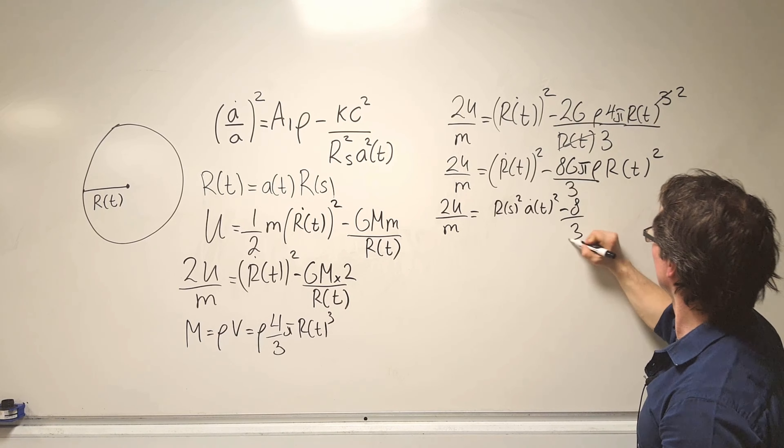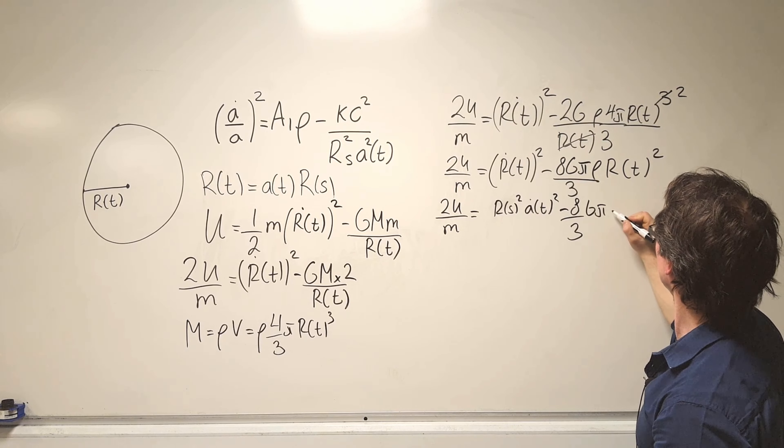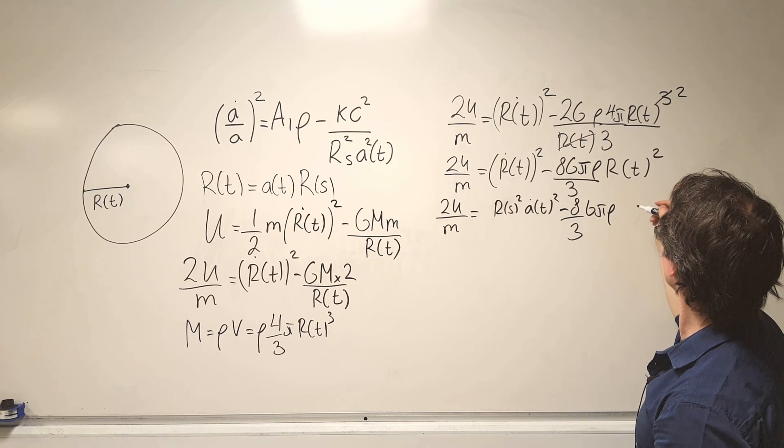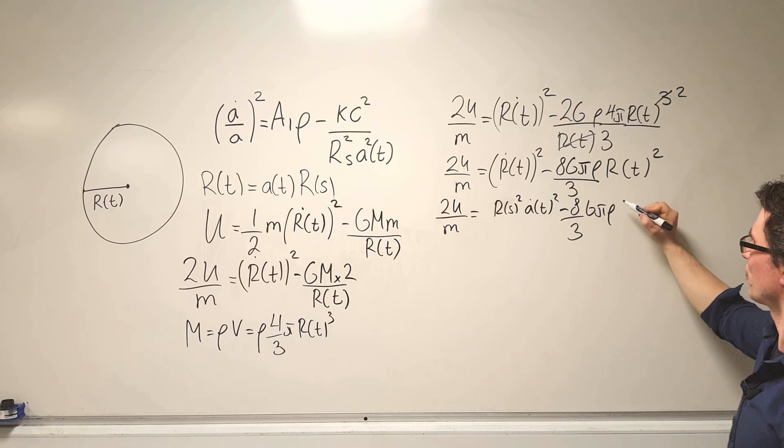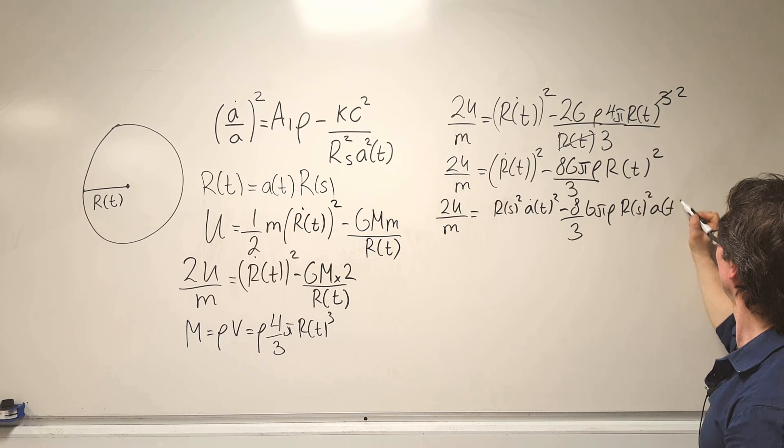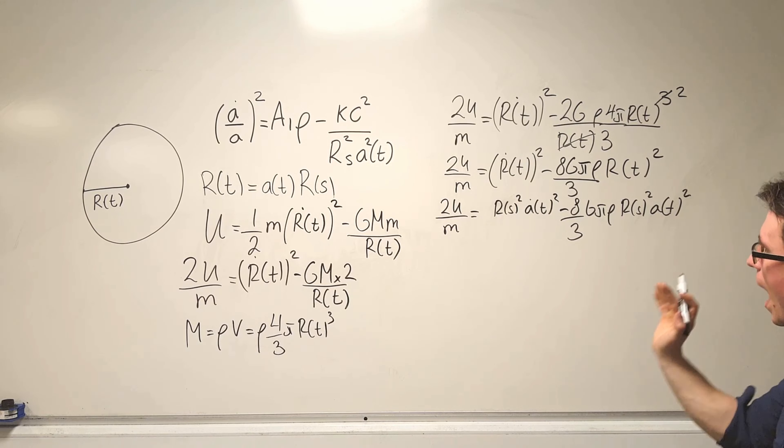Squared like so, and then we're going to take away 8 over 3 G pi rho and then we have R of t squared, so this will just give us R(s) squared times A(t) squared.